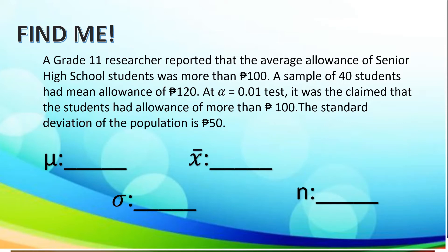Now, let us determine the mean of the population. Based from the problem, the mean of the population is 100. The given mean of the sample of 40 students is 120. The standard deviation of the population is 50, and the number of samples that we are referring to is 40.